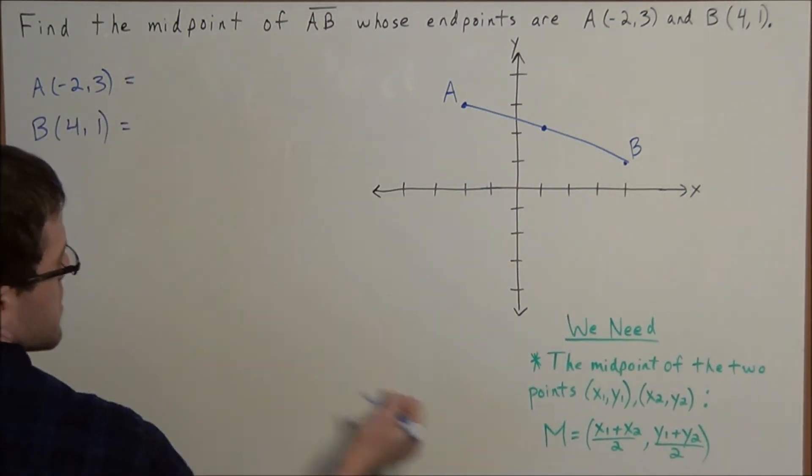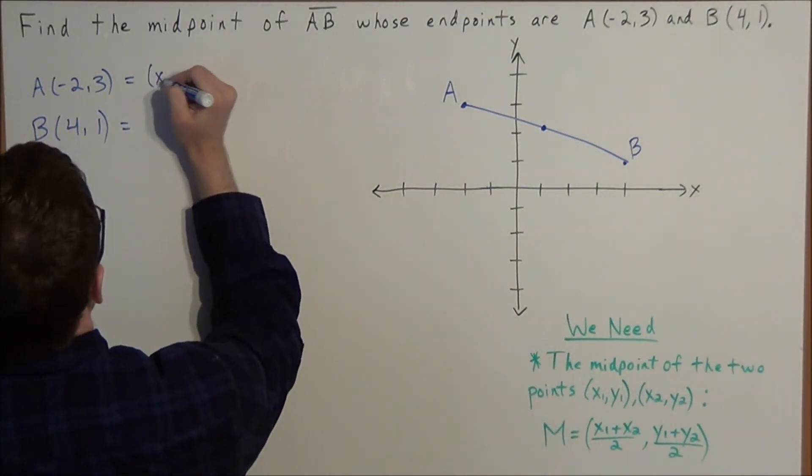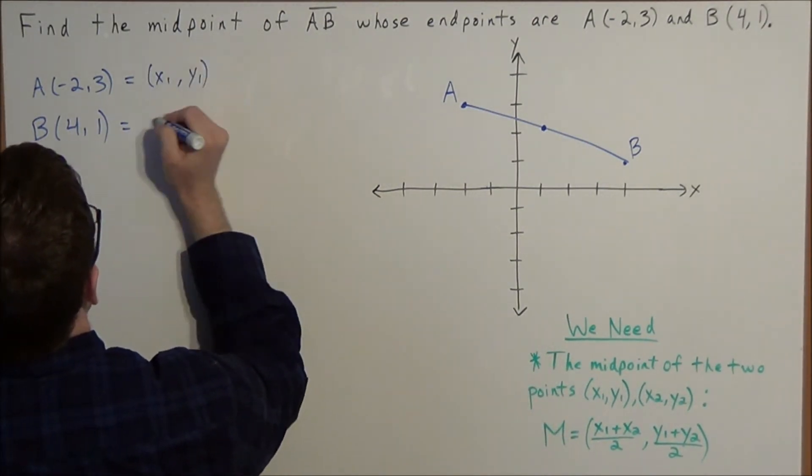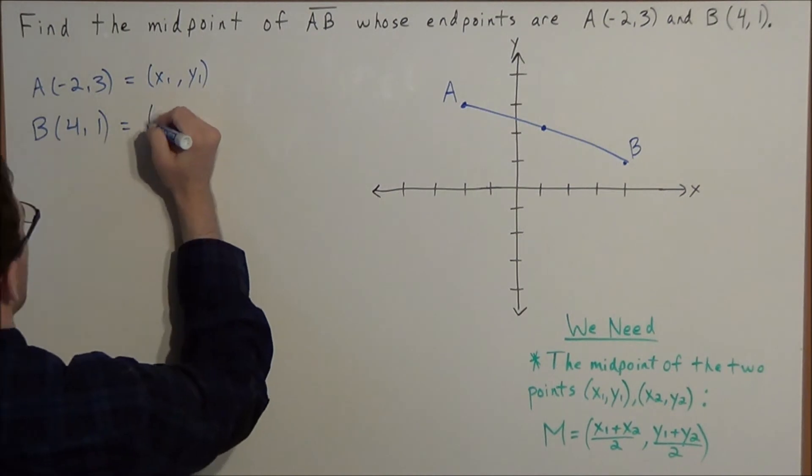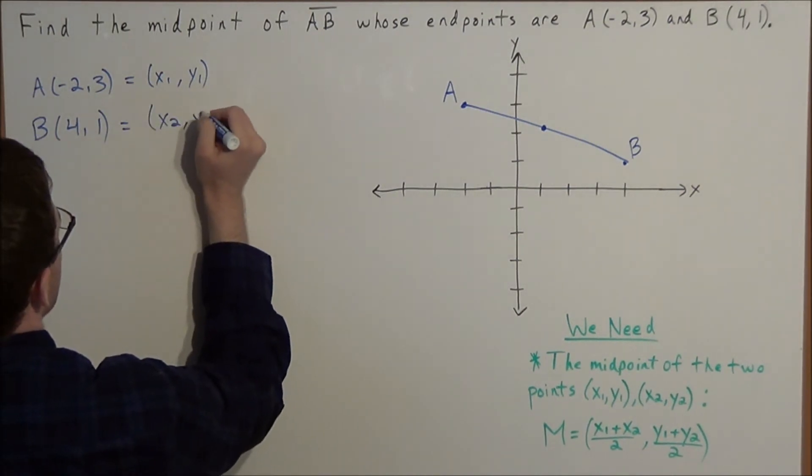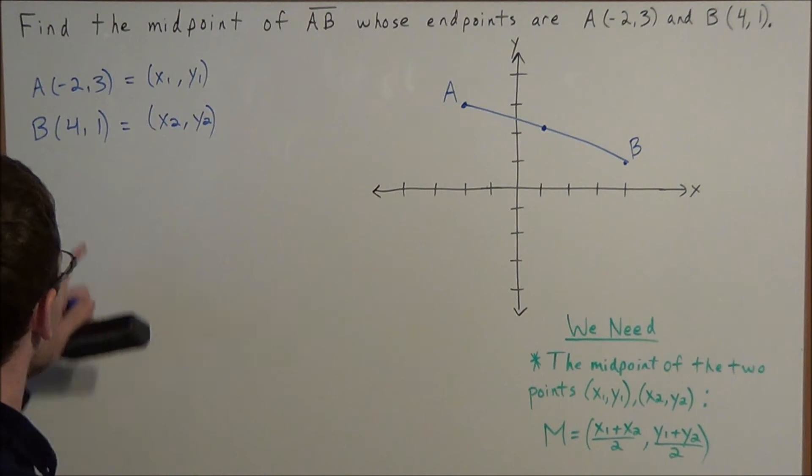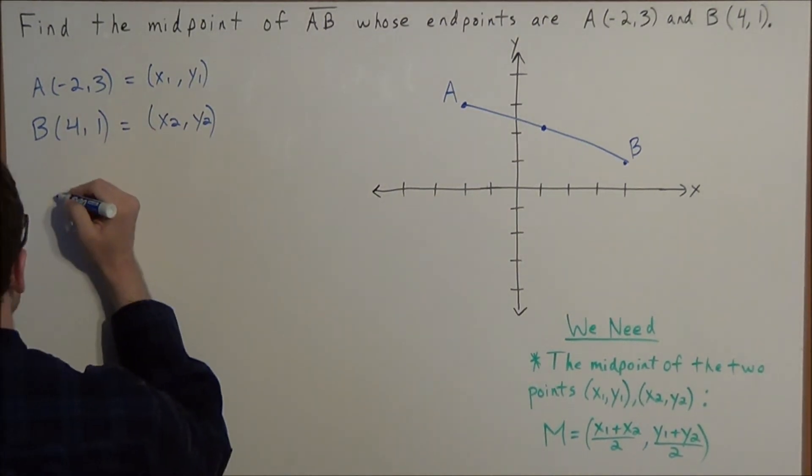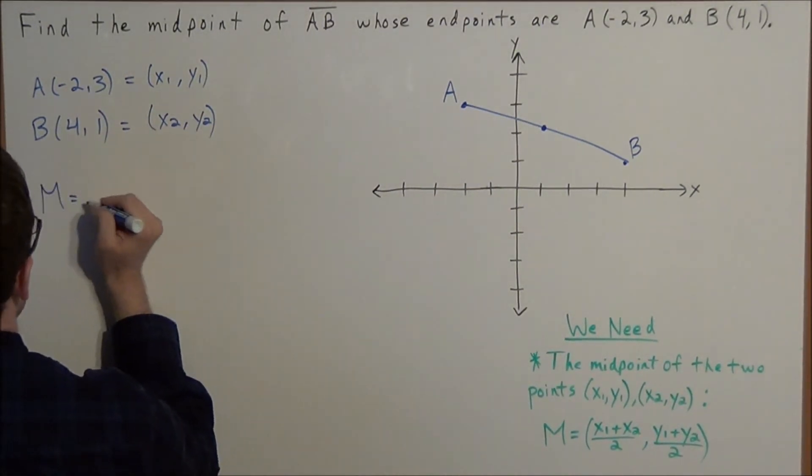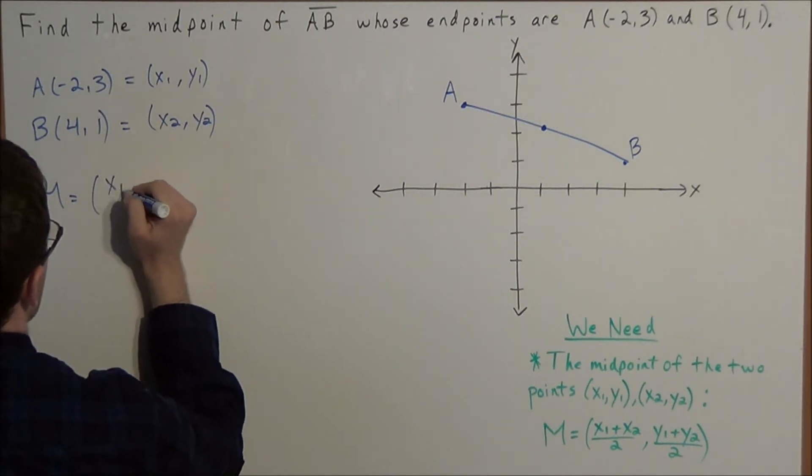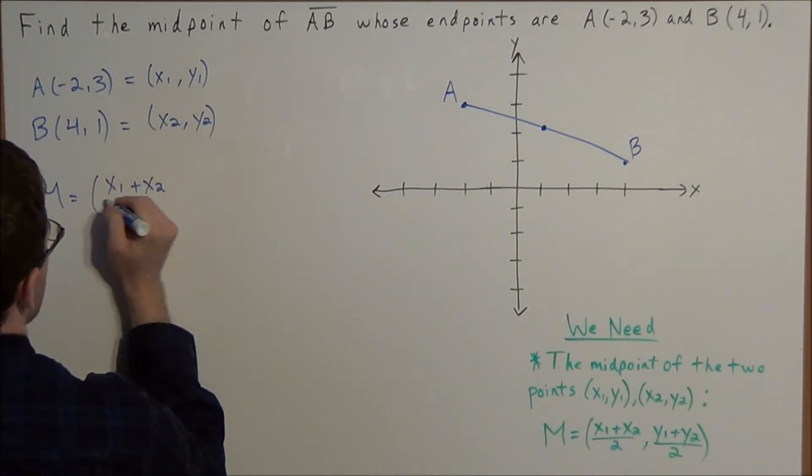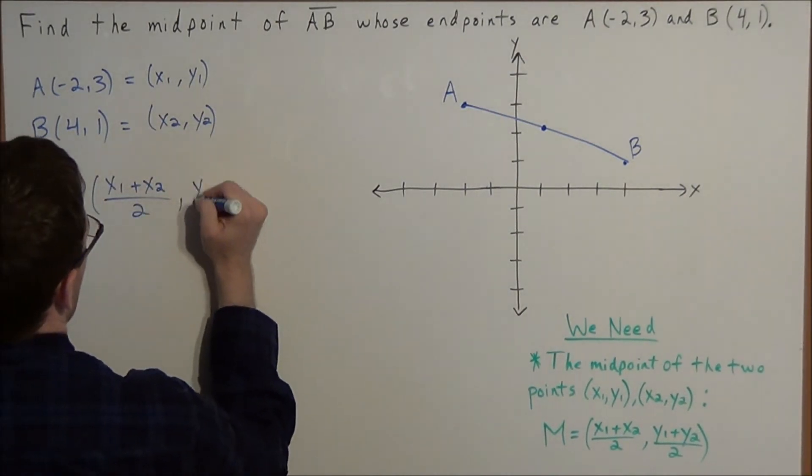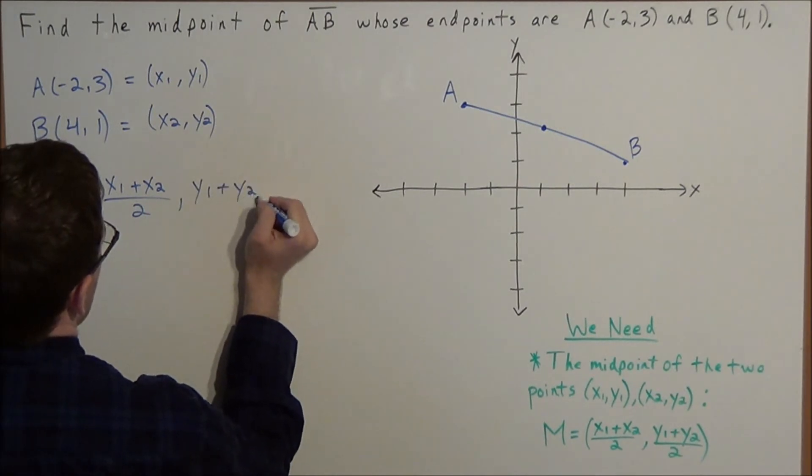So we can designate this to be our (x1, y1) and point B could be our (x2, y2). So now when we set up this equation, we have M = ((x1 + x2)/2, (y1 + y2)/2).